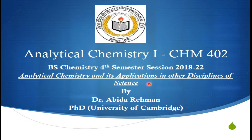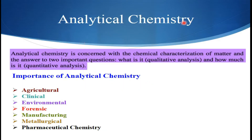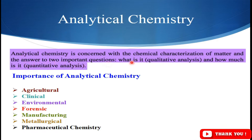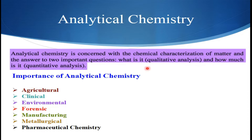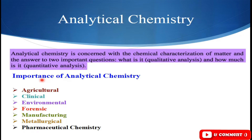Analytical chemistry is concerned with the chemical characterization of matter and the answer to two important questions: what is it, which we will deal with in qualitative analysis, and how much is it, which is concerned with quantitative analysis. In analytical chemistry, we take a substance or compound and analyze it qualitatively — which elements are present — and quantitatively — what is the quantity of those elements.